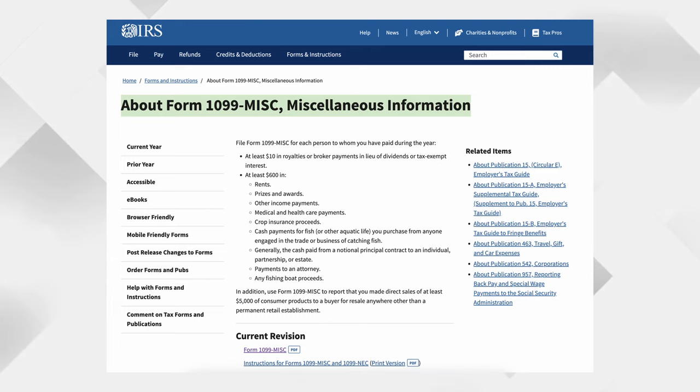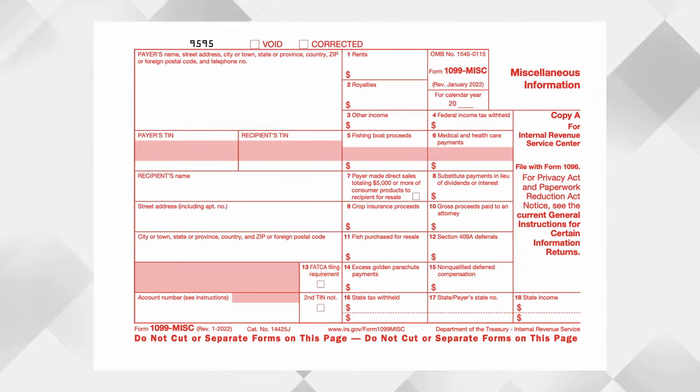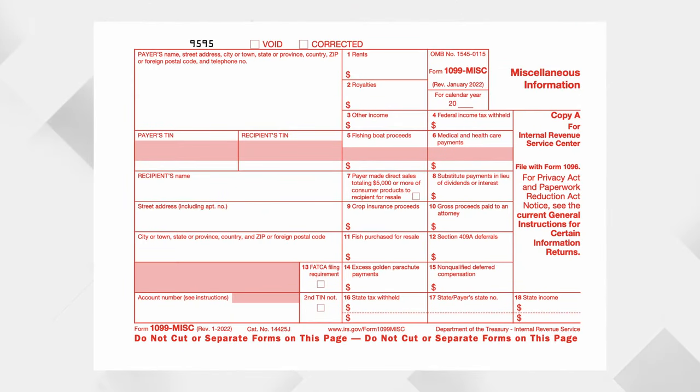If you're a business owner or you're planning to become one, you need to get very familiar with Form 1099 Miscellaneous. There's just no way around that.